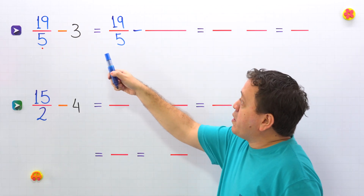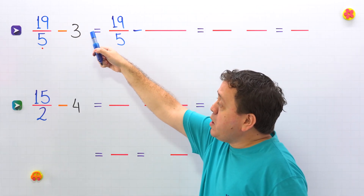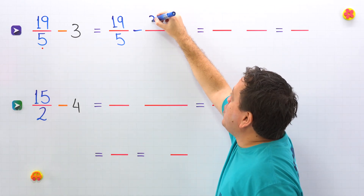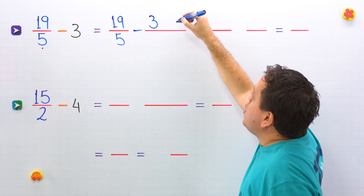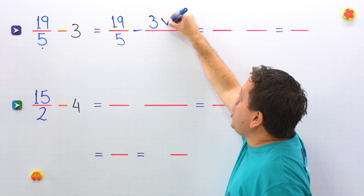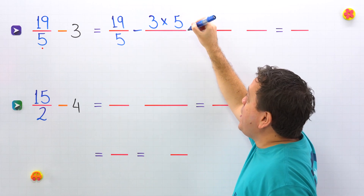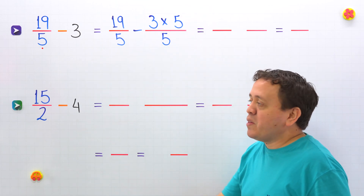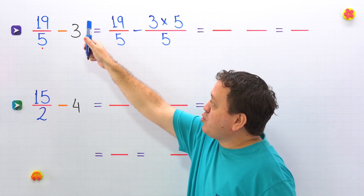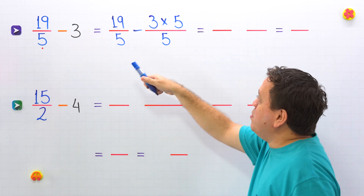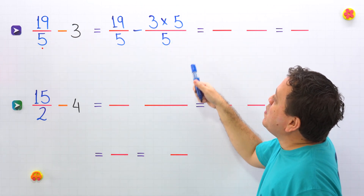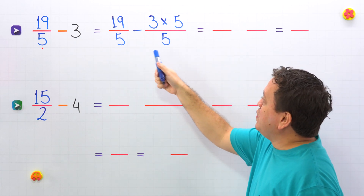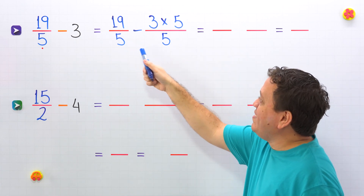In the next step, we convert the whole number 3 to a fraction with a denominator of 5. To do that, we multiply 3 by 5 and then we divide this product by 5. We've done that in order to work with two fractions with the same denominator.